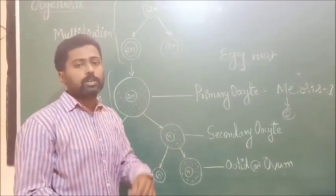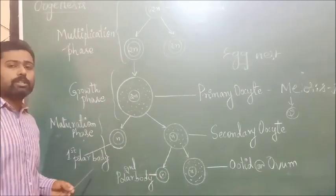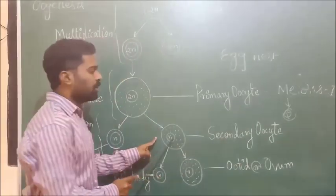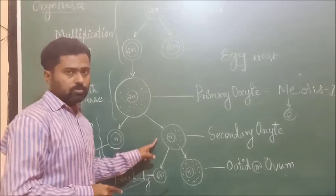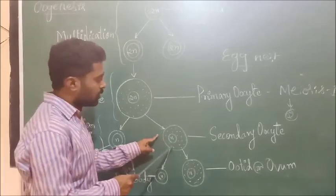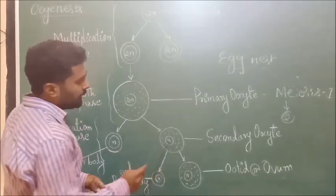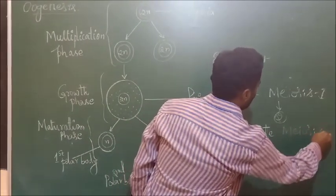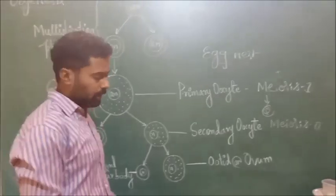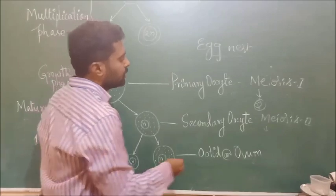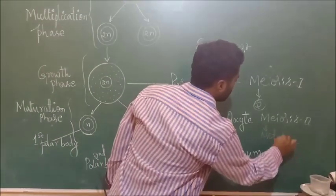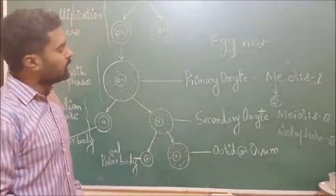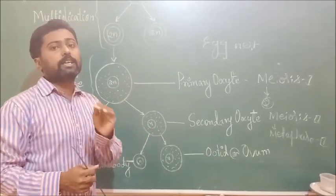The secondary oocyte is a haploid structure with 23 maternal chromosomes. It then enters meiosis II, but the division is arrested at metaphase II. This means the ovum is released in the form of a secondary oocyte. The further divisions of the secondary oocyte take place in the fallopian tube during fertilization, only after the entry of sperm into the secondary oocyte.